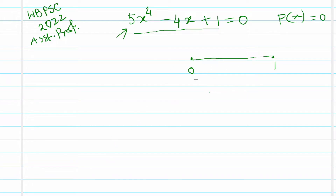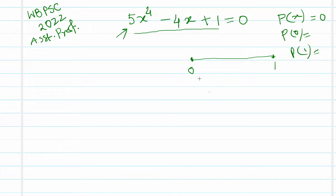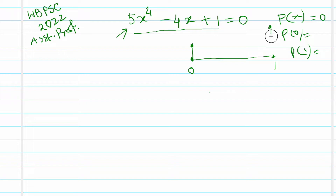First, we check the values at the endpoints: p(0) — substituting 0 gives just 1 — and p(1) — substituting 1 gives 2. So the function starts at 1 at x=0 and ends at 2 at x=1.